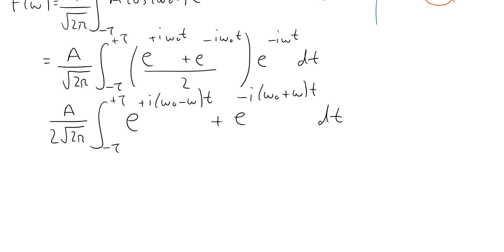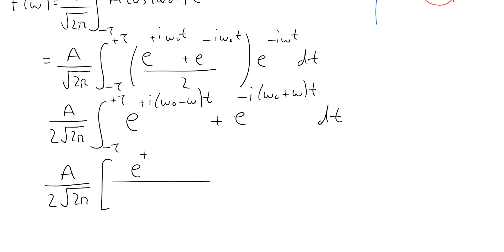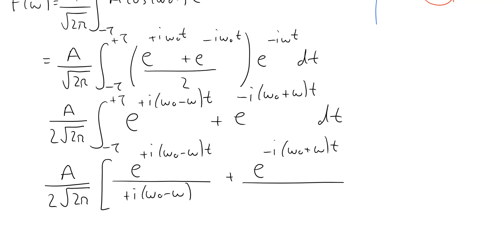Now we've got the integral in a form that's easy to integrate — we just integrate two complex exponentials. We write this as a divided by 2 times the square root of 2 pi. The first exponential integrates to e to the plus i(omega-0 minus omega)t, with a factor of i(omega-0 minus omega) in the denominator. The second term integrates to e to the minus i(omega-0 plus omega)t, with minus i(omega-0 plus omega) in the denominator. The limits are minus tau and plus tau.